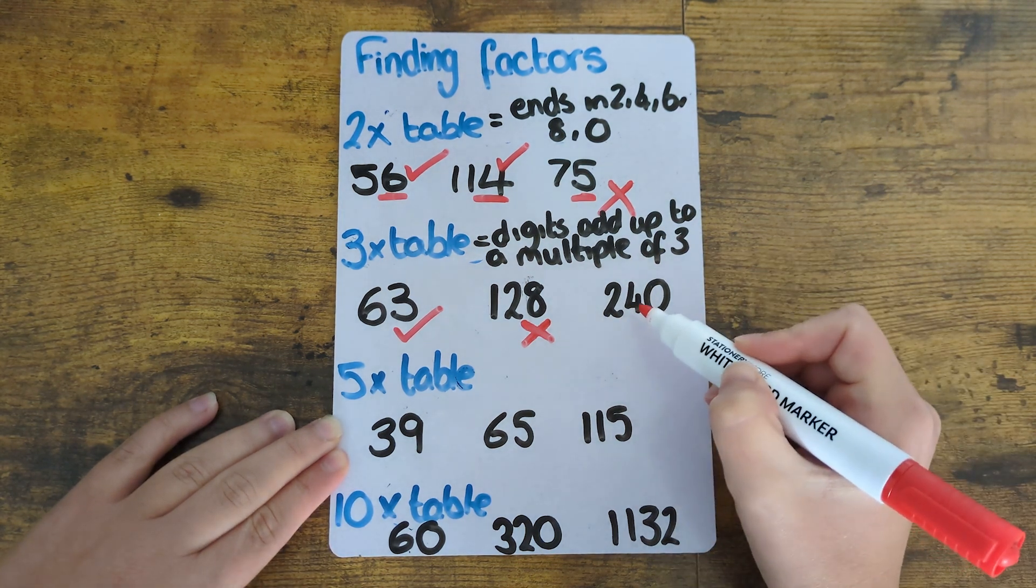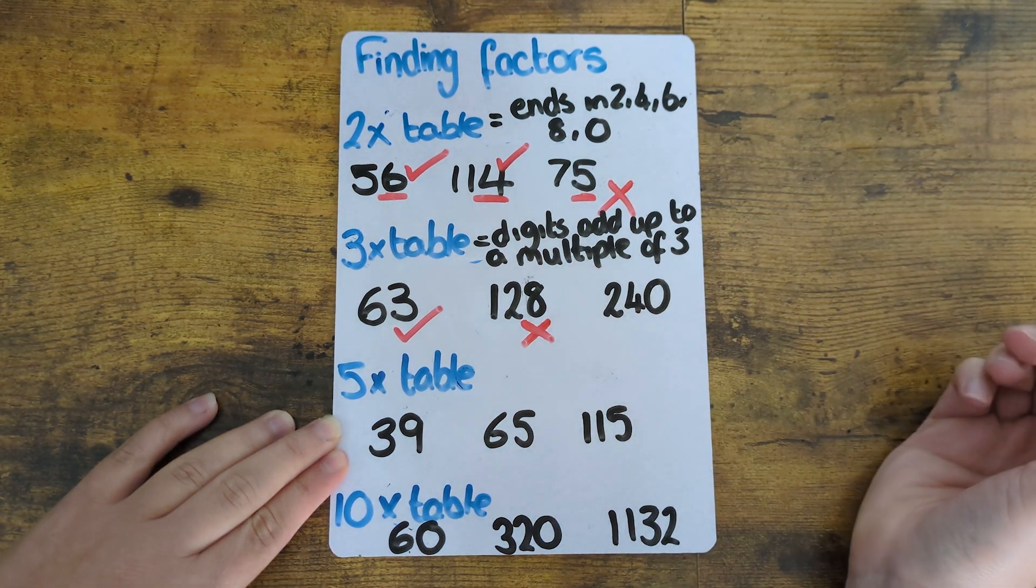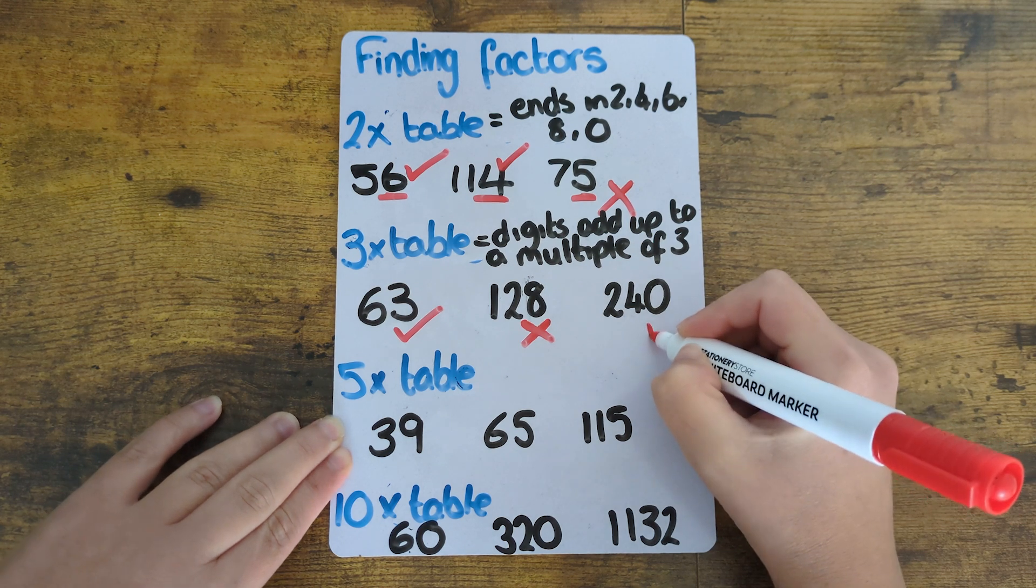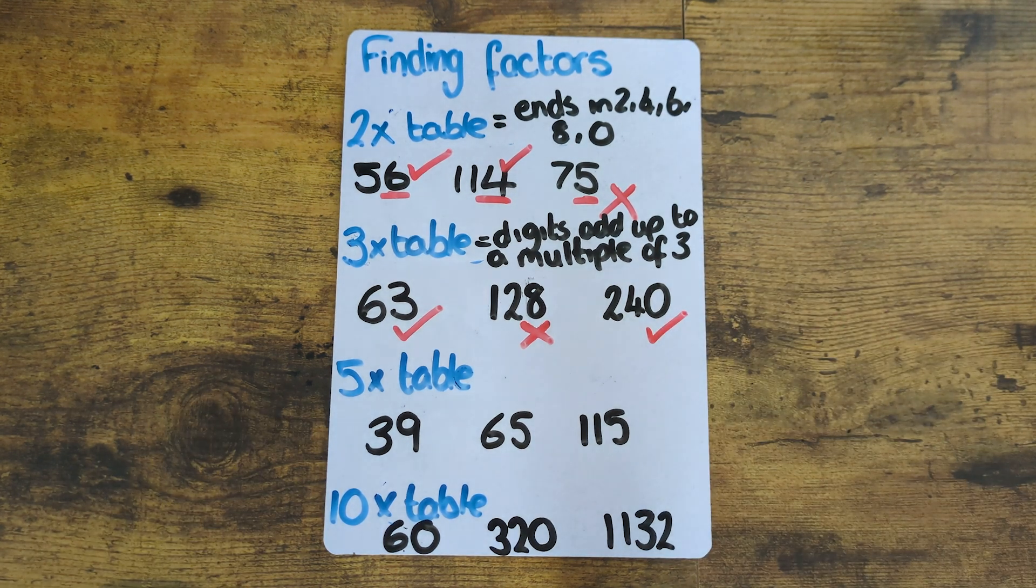240. Two plus four is six plus zero still six. Six is in the three times table so 240 will be.